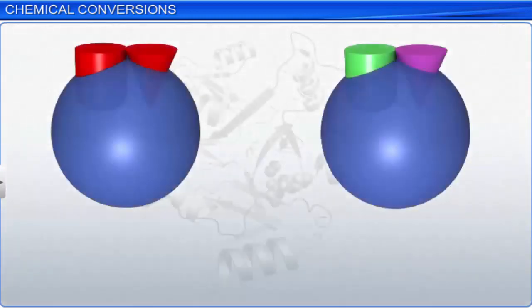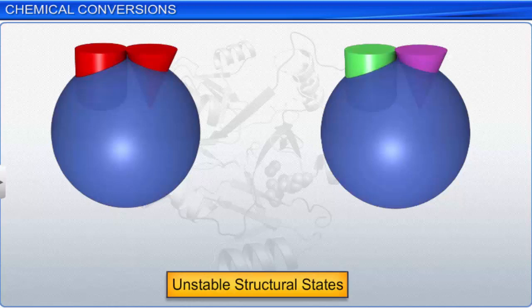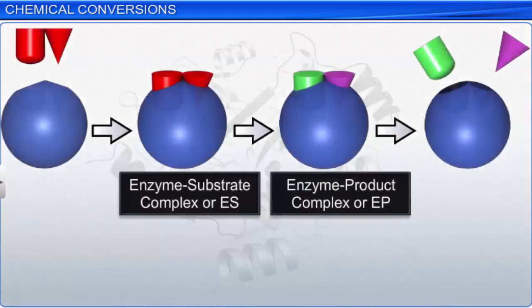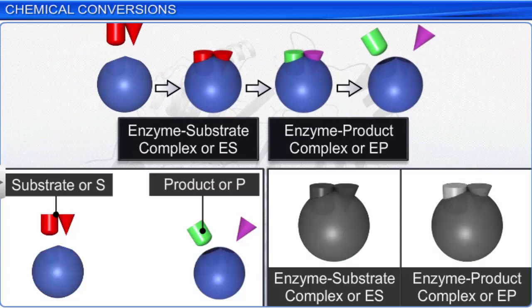During the enzyme action, there can be many temporary, unstable structural states between the stable substrate and the product. For example, ES and EP complexes. These states are also known as altered structural states. Stability refers to the energy status of the molecule or the structure. In other words, stable structures can exist in nature without any uptake or release of energy. For example, S and P have a low energy status and are stable. Whereas, ES and EP complexes with a high energy status are unstable.